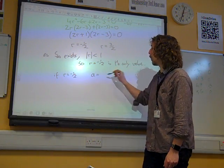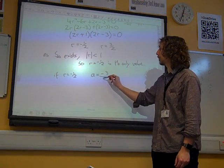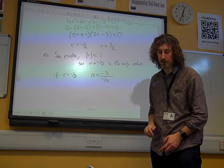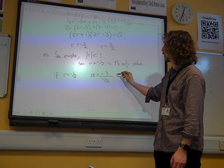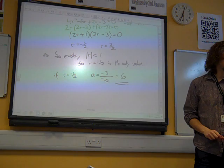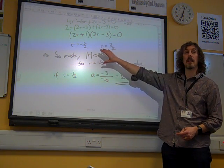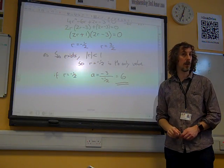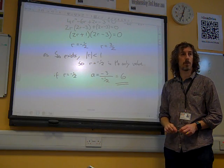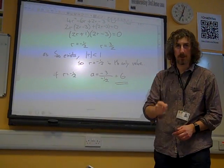So R equals minus 1 half. Remember A was minus 3 over R, and minus 3 divided by minus 1 half gives us plus 6, and there's our value for A and we've done it. It was important that we explained why there was only one value of R that we could use and not just blunder on. OK, and that's maths.